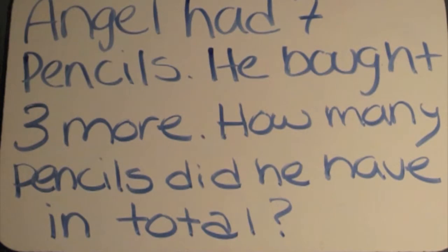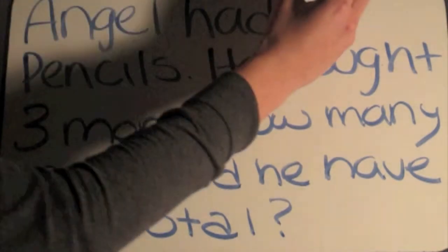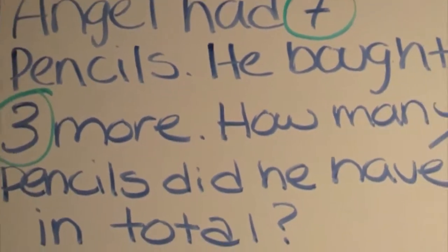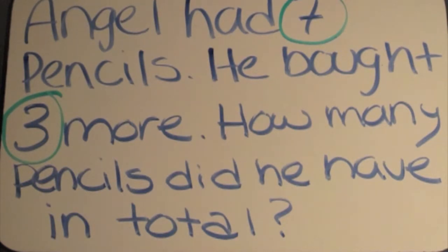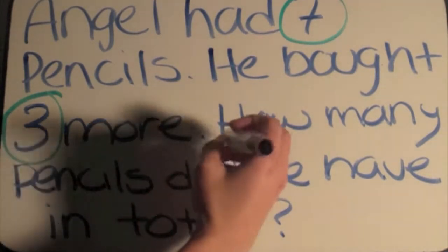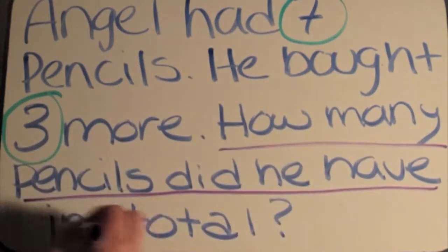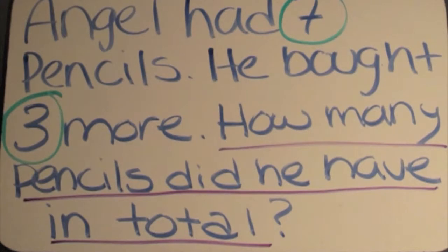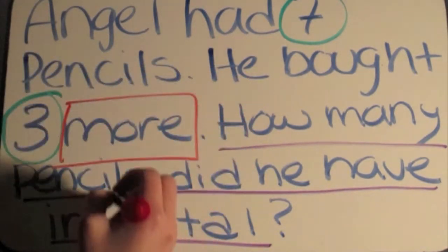Here's an example of a word problem. Angel had seven pencils. He bought three more. How many pencils did he have in total? The first step in CUB is circling the numbers, which is seven and three. The second step is underlining the question: how many pencils did he have in total? The third step is boxing in key words — in this case, 'more' and 'total'.